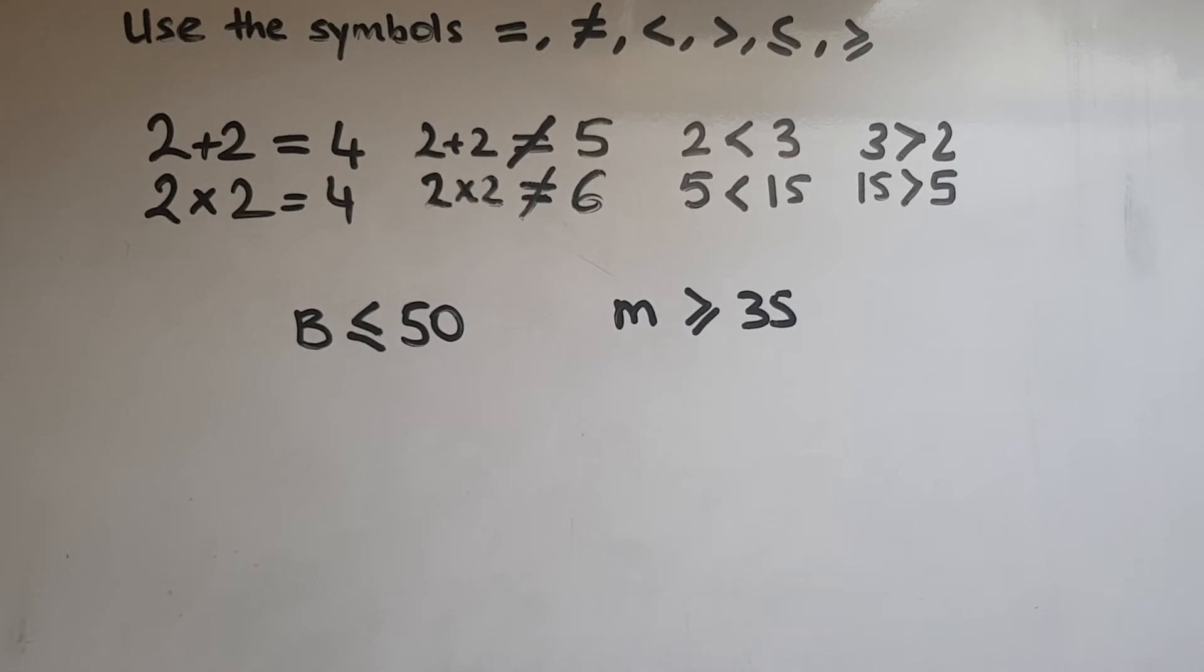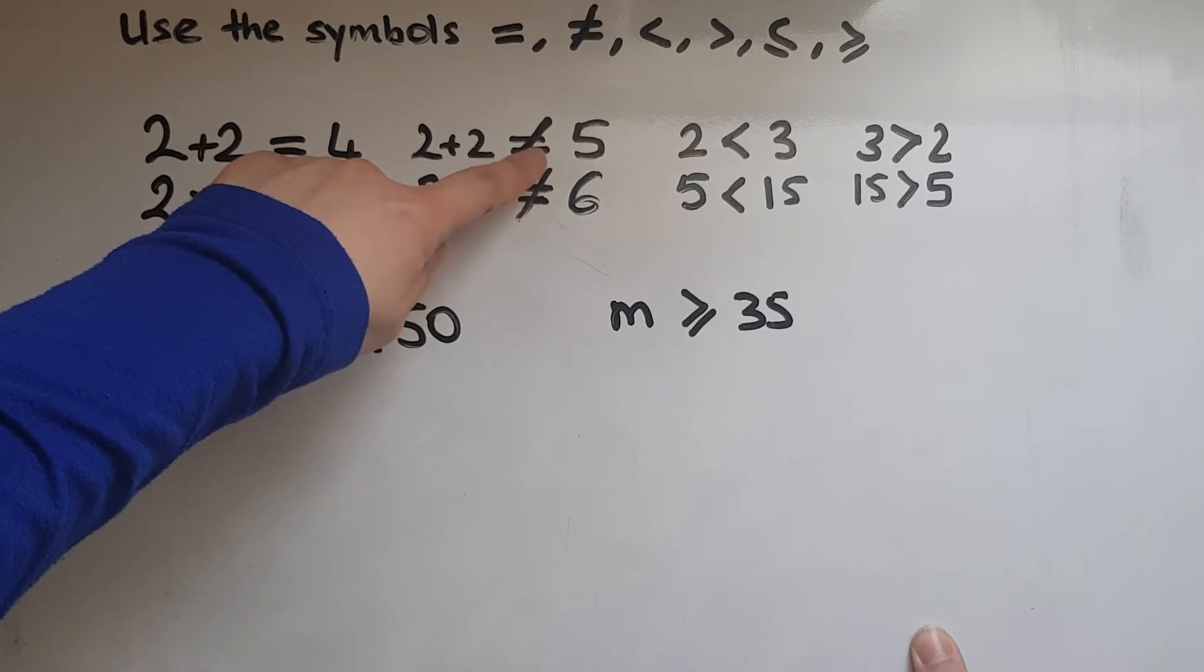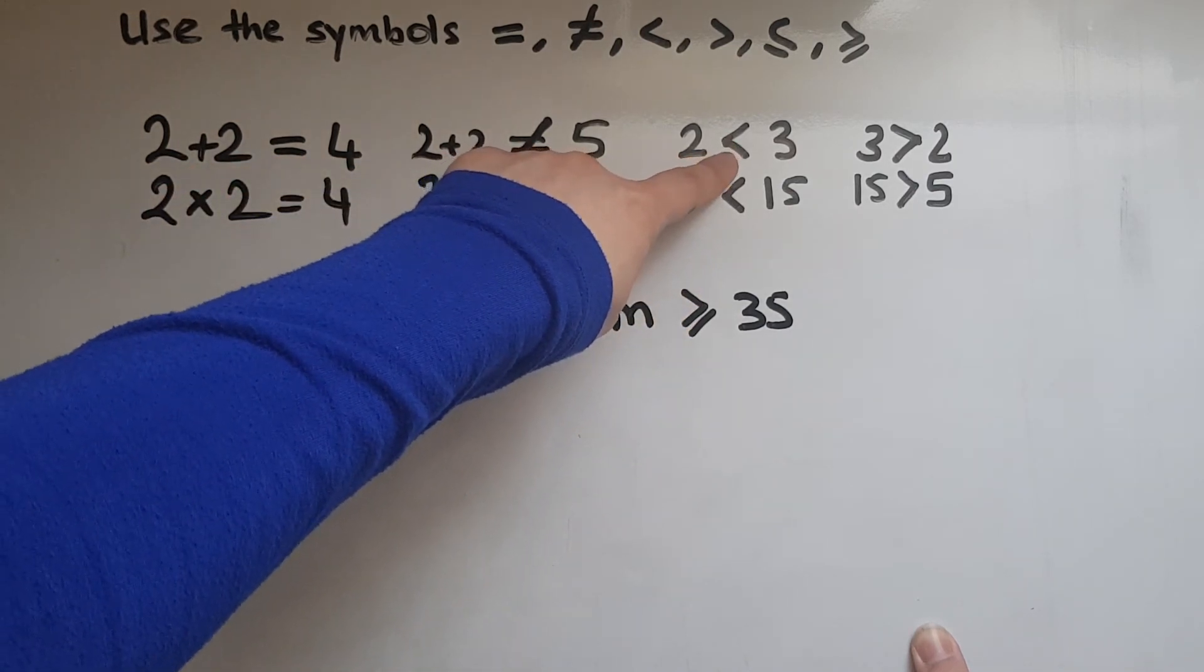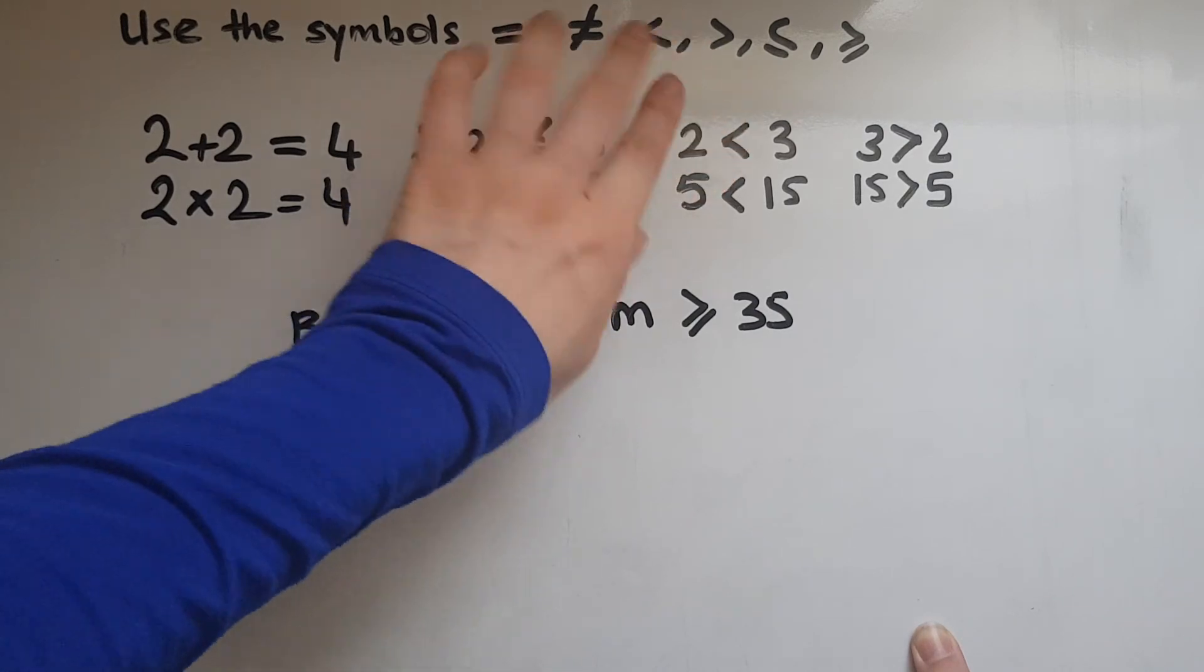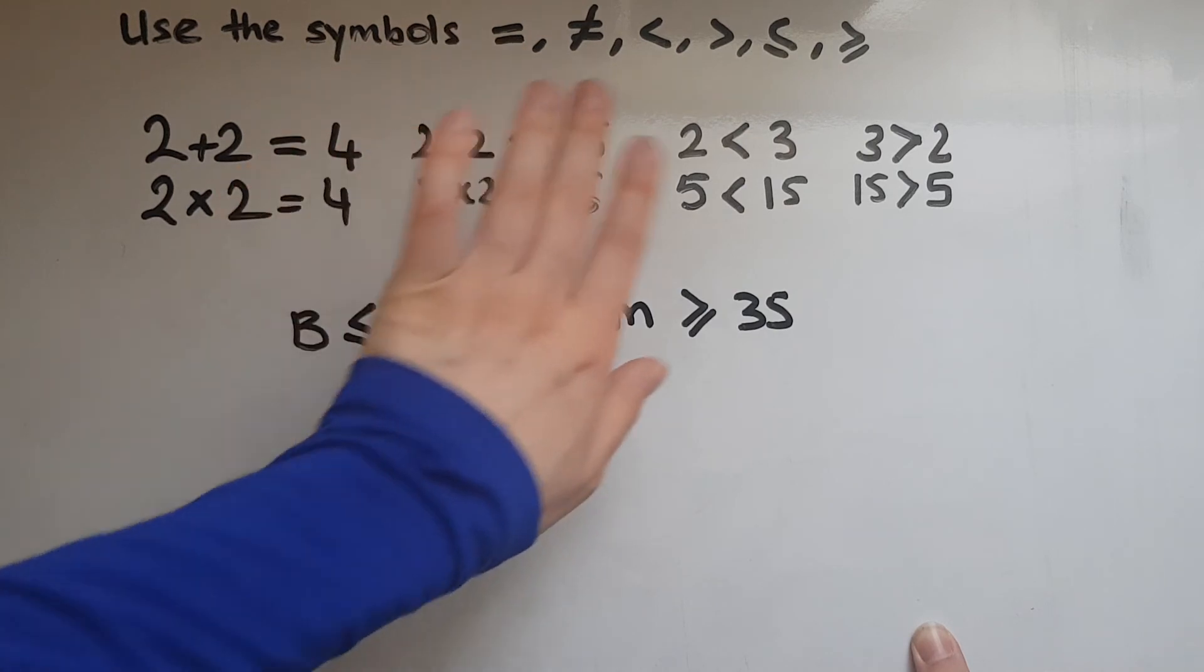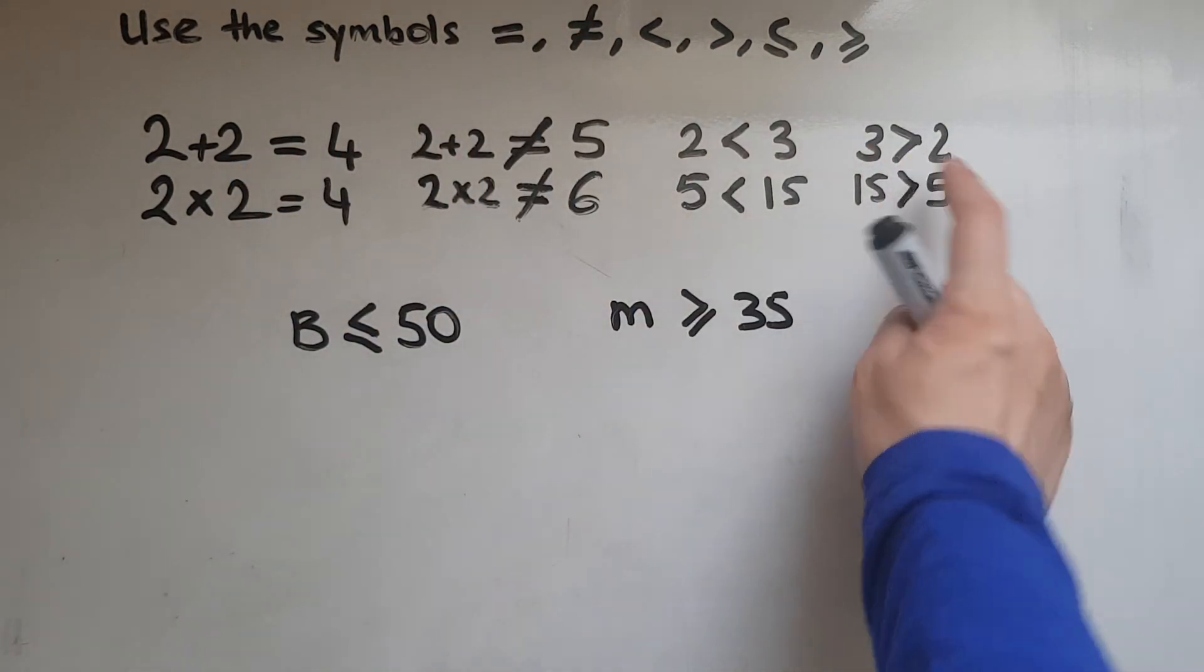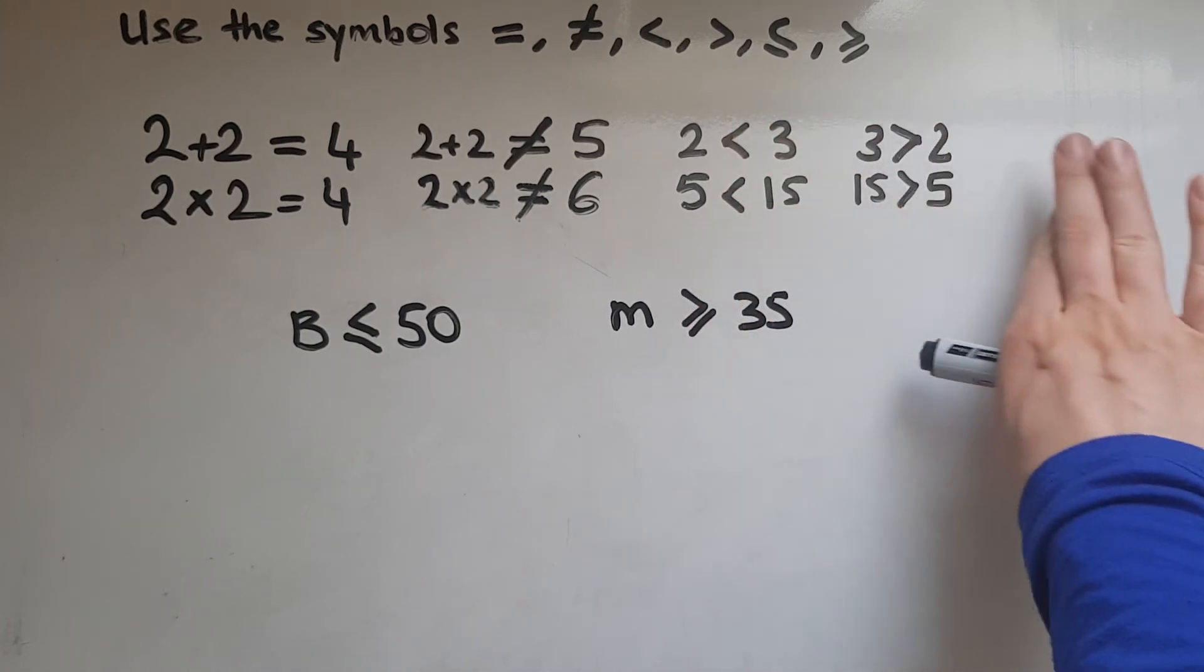To recap, we use the equals symbol when the two sides are equal to each other. We use this symbol when they're not equal to each other. The smaller than symbol when this side is smaller than the other side. And the greater than symbol when the left is greater than the right.